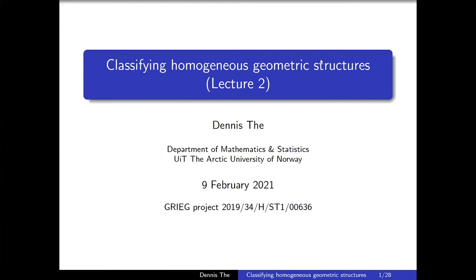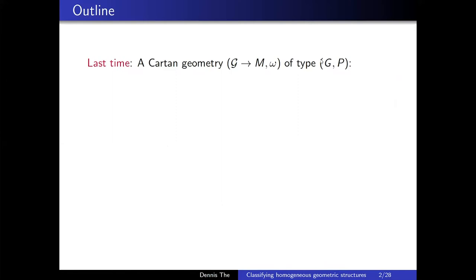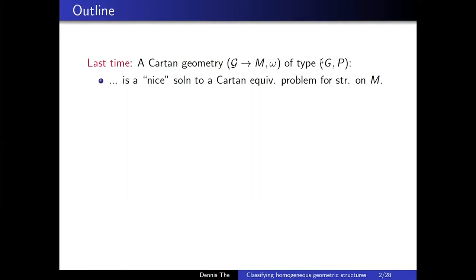Hi everybody. Welcome to Classifying Homogeneous Geometric Structures, lecture two. Last time I introduced the notion of Cartan geometry of type G/P and we saw it from various different perspectives. On one hand, it was a nice solution to the Cartan equivalence problem for some geometric structure on M. In general, the output of the Cartan equivalence method gives you a co-framing, but the extra nice conditions for Cartan connections are that you have equivariancy properties along the fiber and you reproduce the fundamental vertical vector fields.